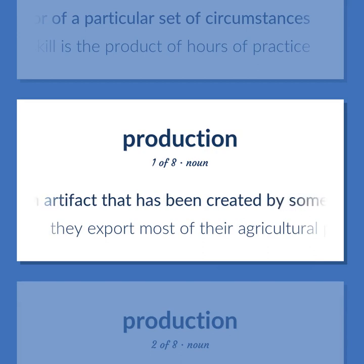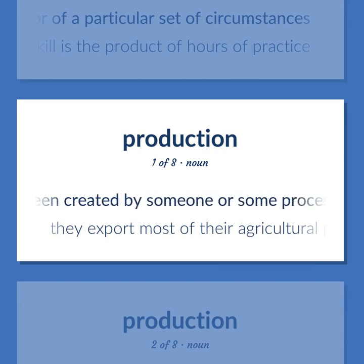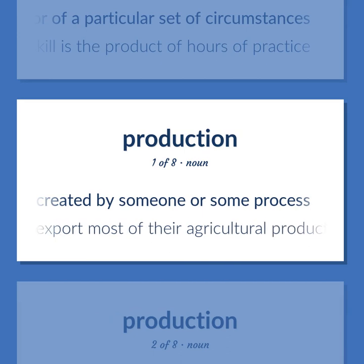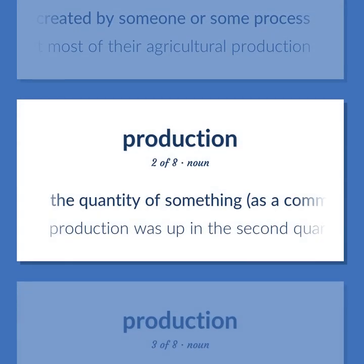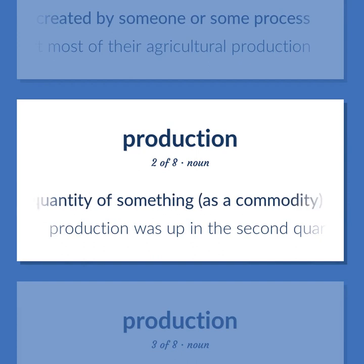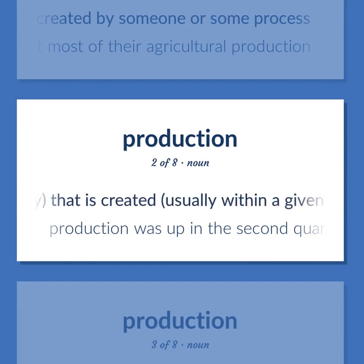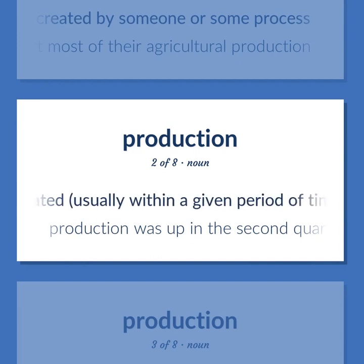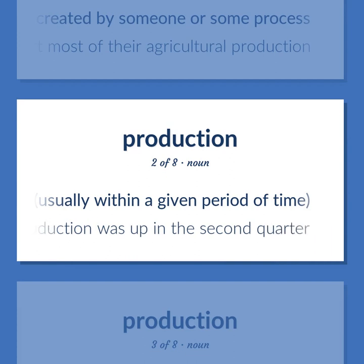Production (noun): An artifact that has been created by someone or some process. Example: They export most of their agricultural production. The quantity of something, as a commodity, that is created, usually within a given period of time. Example: Production was up in the second quarter.